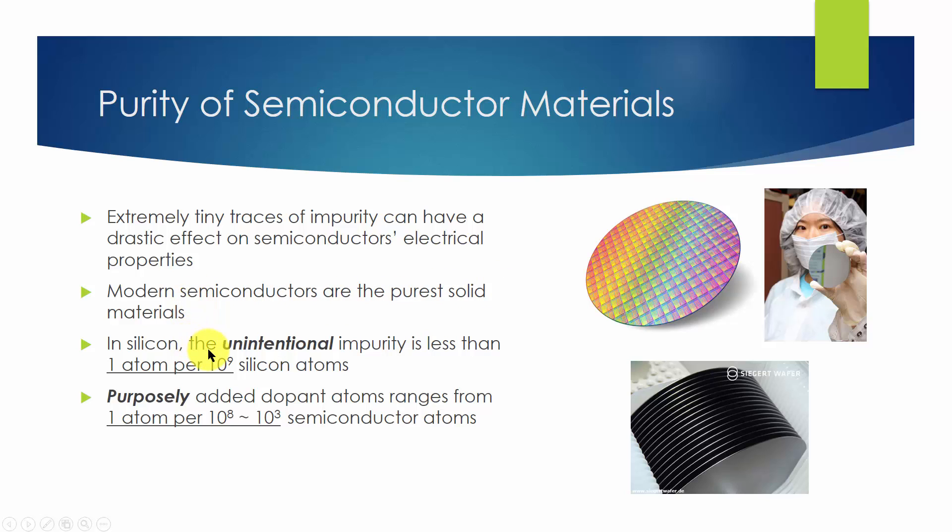In silicon, for example, the unintentional and undesired content of dopant atoms is routinely less than 1 atom per 10 to the power of 9 silicon atoms. Typically, dopant atoms at levels ranging from 1 part per 10 to the power of 8 to 1 part per 10 to the power of 3 will be purposely added to the semiconductor to control its electrical properties.